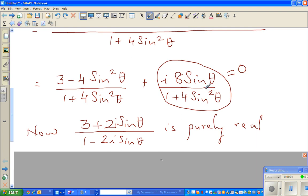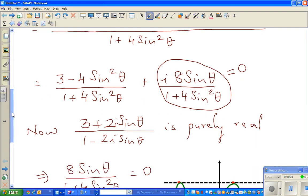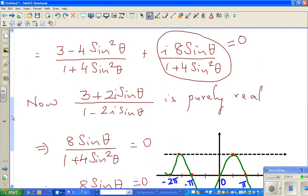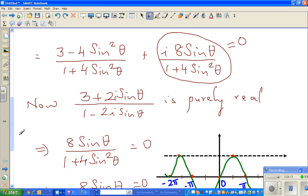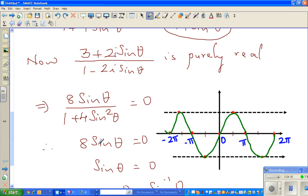This is the real part, this is the imaginary part. We're saying it's purely real, which means there is no imaginary part. So we can say this equals zero. Ultimately, we end up with 8sin(θ) = 0, so sin(θ) = 0. Now this is a trig equation.